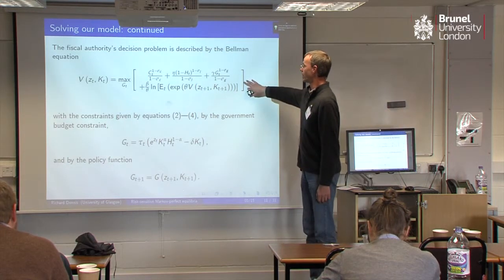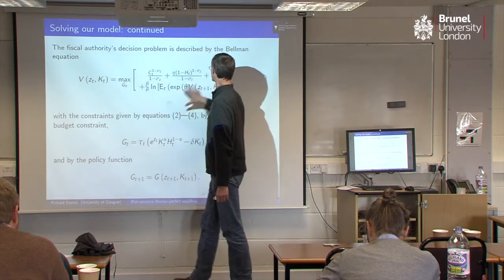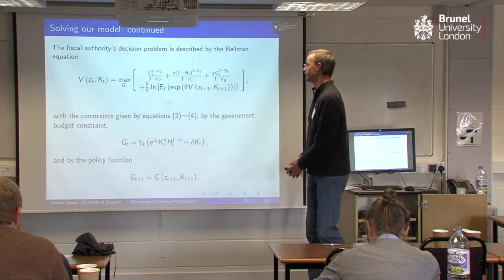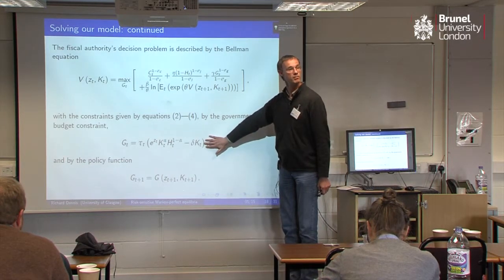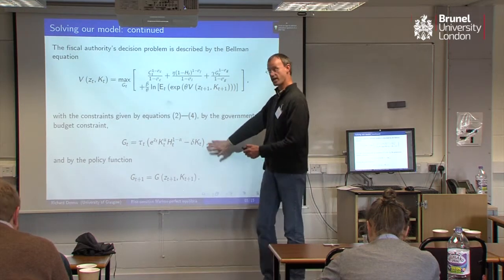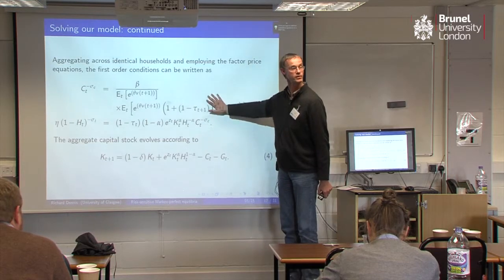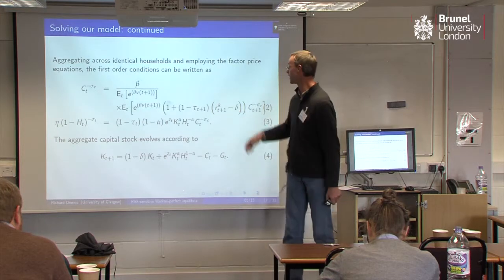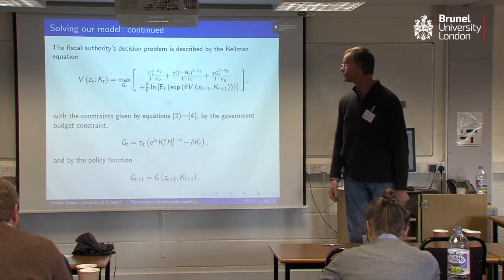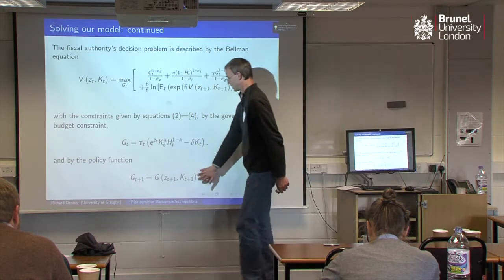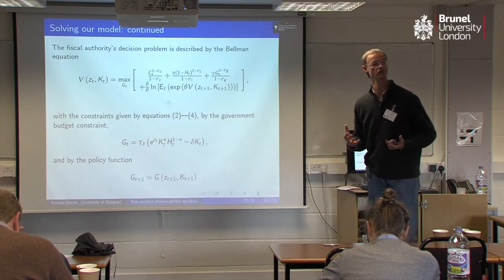The fiscal authority's problem is described by this Bellman equation — it depends on the level of technology and the aggregate capital stock, and other than that it's of the same form as the household's problem. The constraints on the fiscal authority are its own government budget constraint, but it's also the first mover within the period, so it takes the reaction of the other agents in the economy into account. Solving the model backwards within the period, the households' and firms' first-order conditions act as constraints on the first mover. And it's going to be taking anything to do with the future as given, because it takes the process by which policy is formed in the future as given.